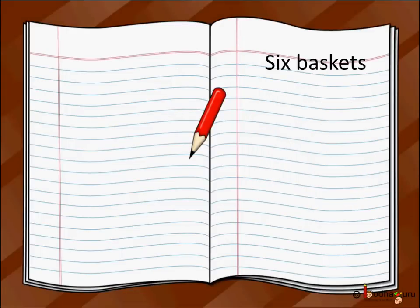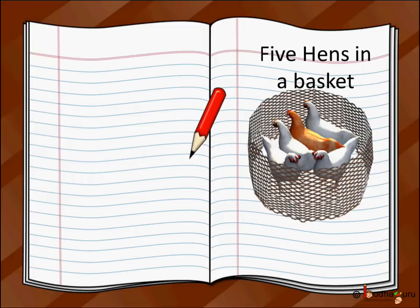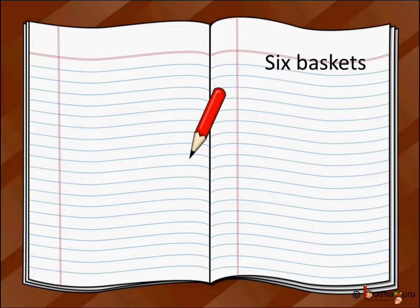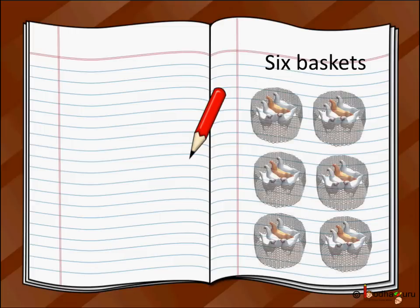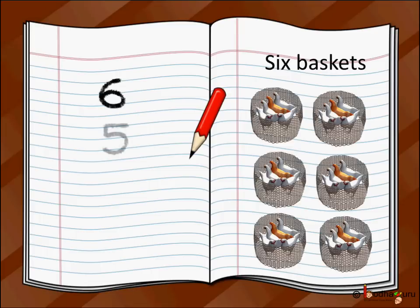And how do we do it? Here are 5 hands in a basket and 6 such baskets. So total hands are 6 times 5. We write it like this: 6, then 5 below it, then a multiplication sign — that is, a cross sign on the left side of 5. So, 6 multiplied by 5, or 6 times 5.